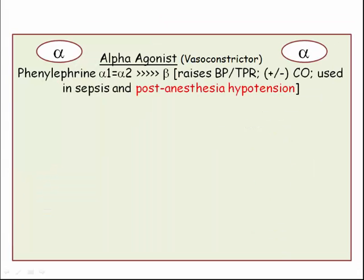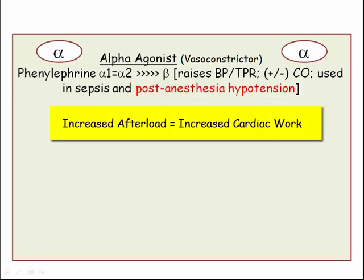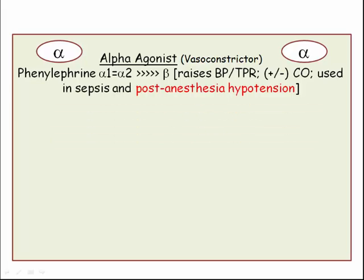Here is a brief review of the agents. Phenylephrine is a pure alpha agonist. As such, it raises blood pressure and total peripheral resistance. It has a variable effect on cardiac output, which makes sense — increasing afterload would be expected to decrease cardiac output. The most common indicated clinical use for phenylephrine is in the patient with post-anesthesia hypotension.